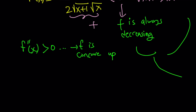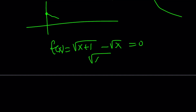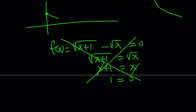What does that mean? We have a function with value 1 at x equals 0, and the function is decreasing. Will it ever intersect the x-axis? For f of x to be zero, square root of x plus 1 would have to equal square root of x, meaning x plus 1 equals x, meaning 1 equals 0 — which is impossible. So our function has no x-intercept and stays above the x-axis. Since square root of x plus 1 is always greater than square root of x, f of x is always positive.